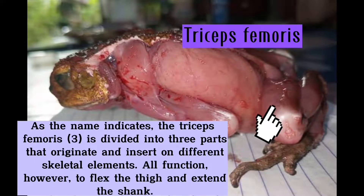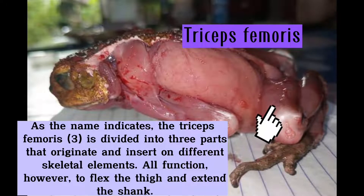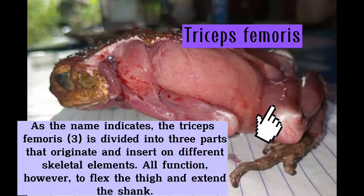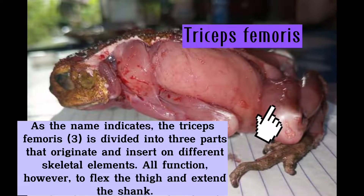As the name indicates, the triceps femoris is divided into three parts that originate and insert on different skeletal elements. All function, however, to flex the thigh and extend the shank.